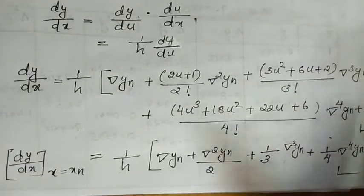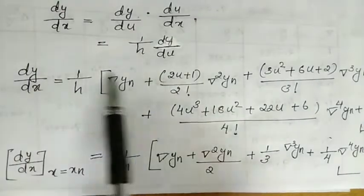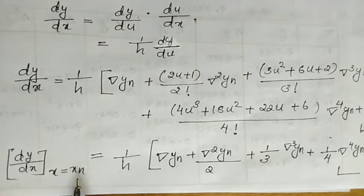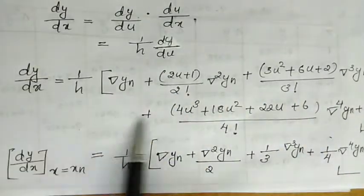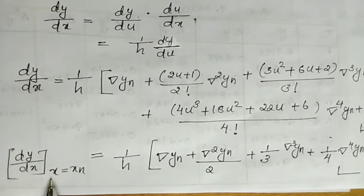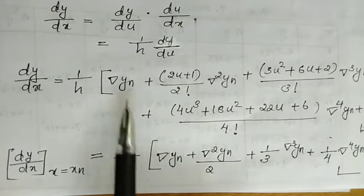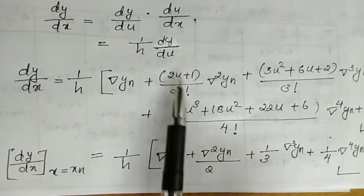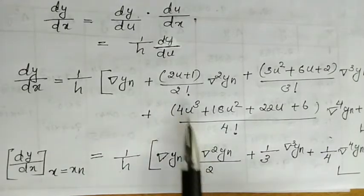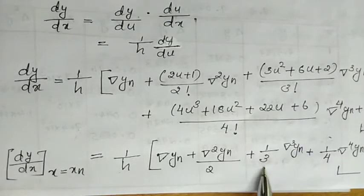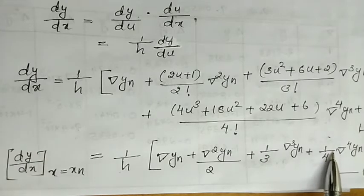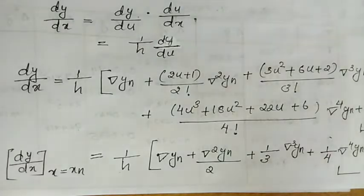Then, for the backward method, dy by dx at x equal to xn — that is, substituting u equals 0 — gives: 1 by h times del yn, plus 1 by 2 del square yn, plus 1 by 3 del cube yn, plus 1 by 4 del raise to 4 yn, plus etc. This is dy by dx at x equal to xn.